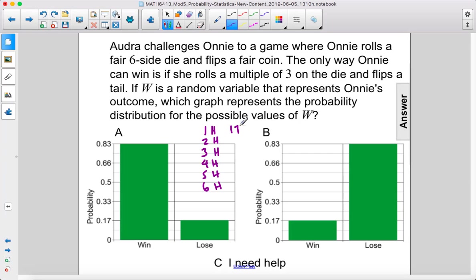Or a one and tails, two and tails, three and tails, four tails, five tails, six tails. So of these 12 possible outcomes, she only wins if she rolls a multiple of three and flips a tail. So that's going to be three and tail and six and tail.